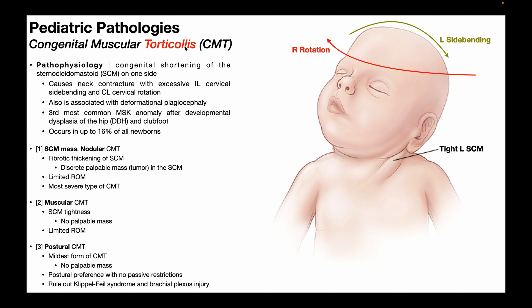In this video, we're going to be discussing a pediatric pathology known as congenital muscular torticollis, abbreviated CMT and normally just shortened to torticollis. When a baby is born with torticollis, it's born with a congenital shortening or a contracture of the sternocleidomastoid on one side.